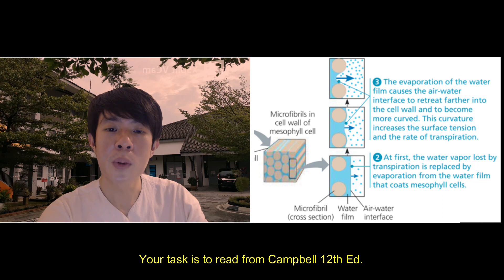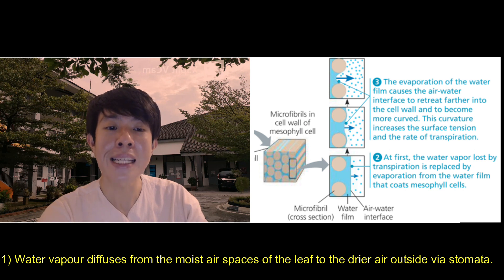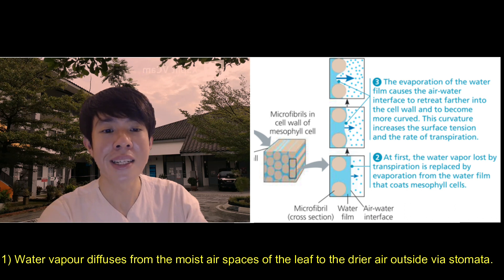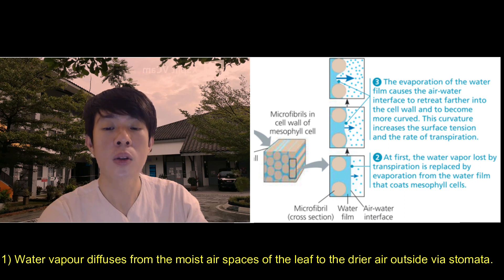Transpiration pull, as described by Campbell 12th edition: water vapour diffuses from the moist air spaces of the leaf to the drier air outside via the stomata. At first, the water vapour lost by transpiration is replaced by evaporation from the water film that coats the mesophyll cells.